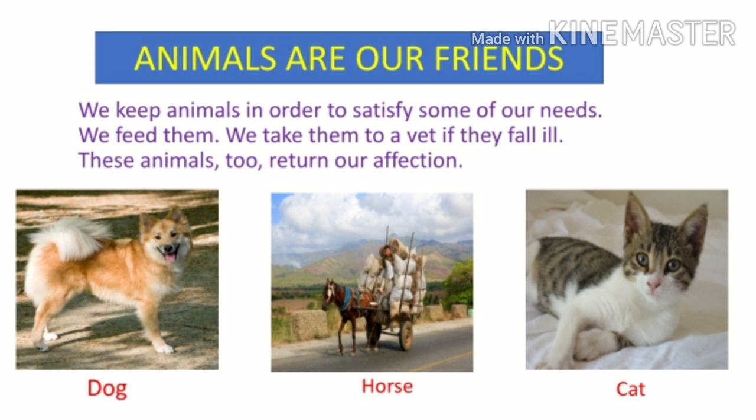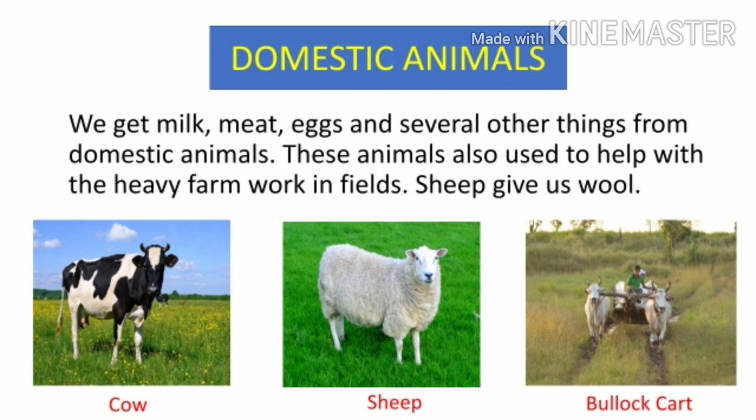Domestic animals provide us milk, meat, eggs, and several other things. These animals are also used to help with heavy farm work in the fields. Sheep give us wool, and dogs guard our house.